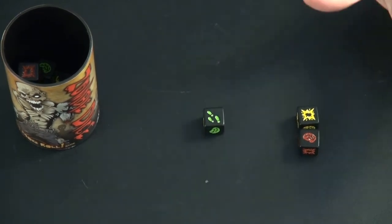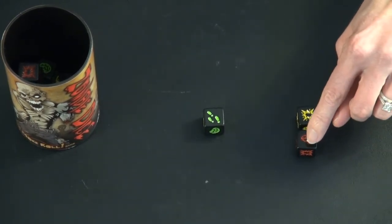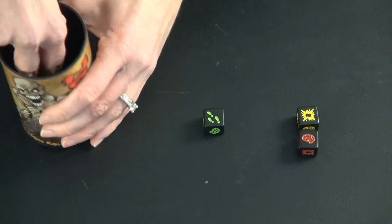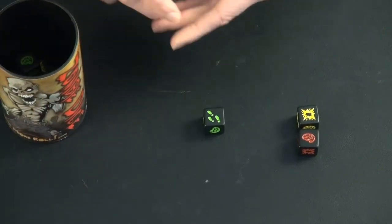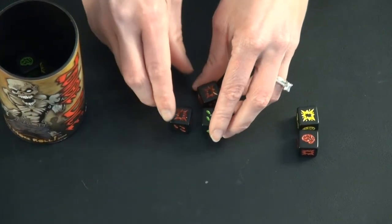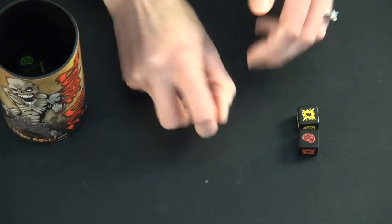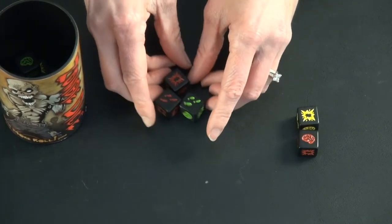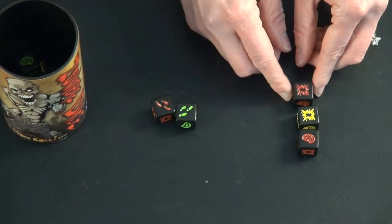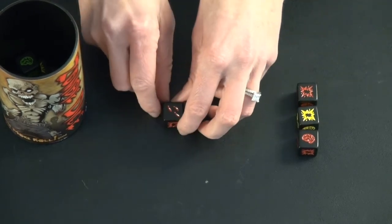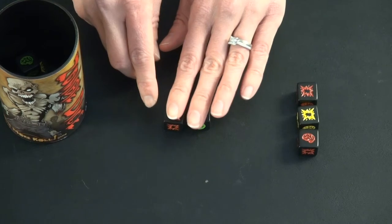So at this point, you can choose to stop and you would just get one brain. Or you can continue to roll and you take out two more of the dice. And then you get to roll again. And you have to put any shotguns off to the side. And you have the choice to re-roll again.